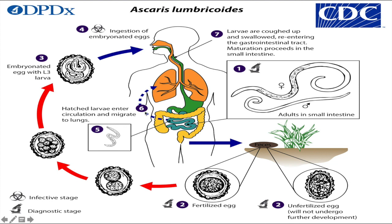The larvae mature further in the lungs over about 10 to 14 days. They penetrate through the alveolar walls, then ascend the bronchial tree to the throat and are swallowed. Upon reaching the small intestine, they develop into adult worms. The larvae are coughed up and swallowed, re-entering the gastrointestinal tract, and maturation proceeds in the small intestine.